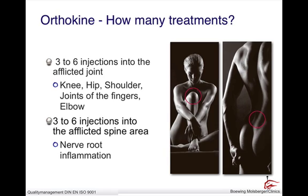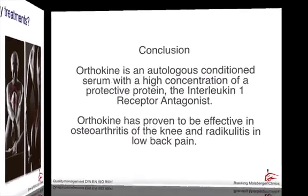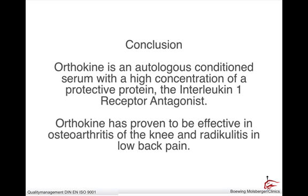Generally, the patient receives three to six injections into the afflicted joint or spine area. In summary, orthokine is an autologous conditioned serum with a high concentration of the protective protein interleukin-1 receptor antagonist.